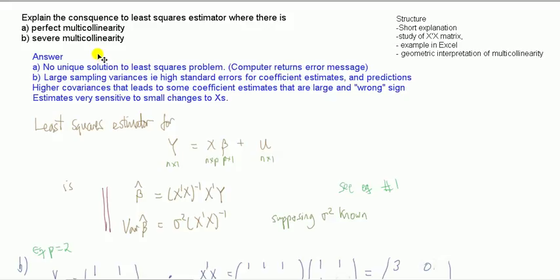More usually, if you have multicollinearity, it is severe multicollinearity — where you have near linear dependence. What that means is it's going to make your estimates, your output, pretty unstable. If I run it for one sample and then run it for a different sample from the population, I'm going to get very erratic, very different parameter estimates and standard errors.